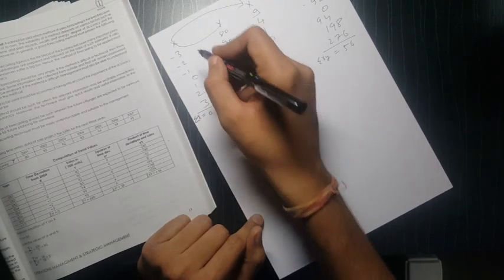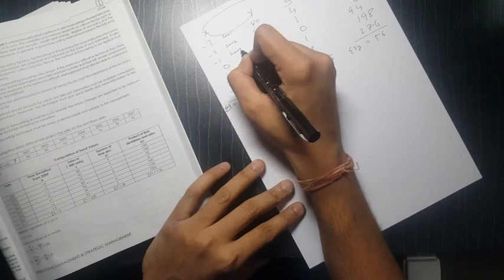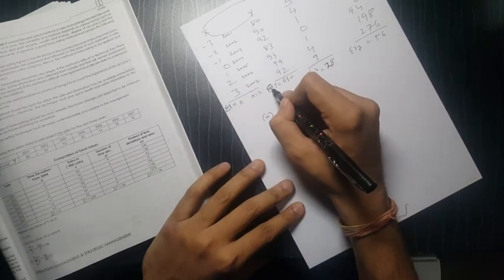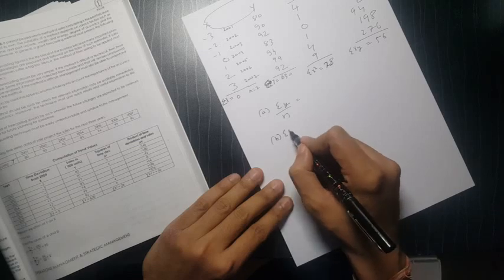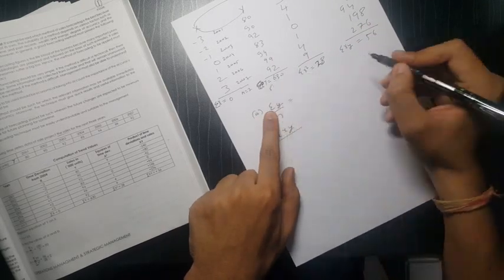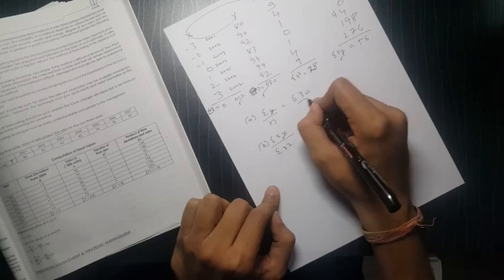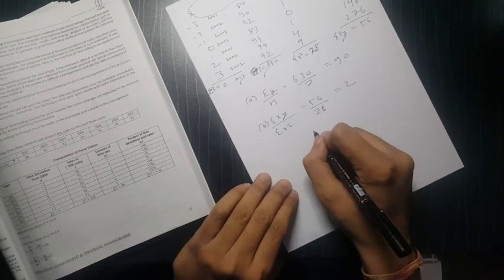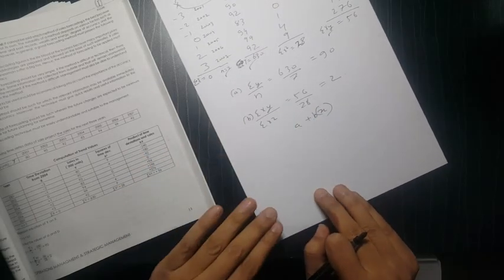Yeh bhi likhna padega: 2001, 2002, 2003, 2004, 2005, 2006, 2007. Okay, this is submission y, submission x square, submission x, y. And the second formula is submission xy upon submission x square. So it's 630 upon 7 is equal to 90. 56 upon 28 is equal to 2. Now one formula: A plus bx. A ki toh bola xy upon n. XY upon x square. Now A plus bx, A kya hai? This is submission y upon n, submission xy upon x square. A hai 90, b hai 2.